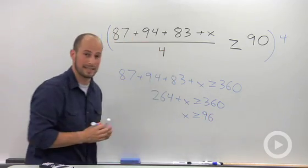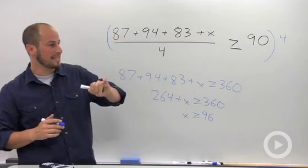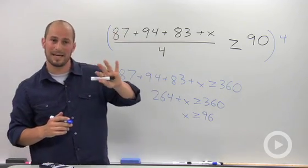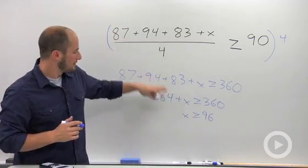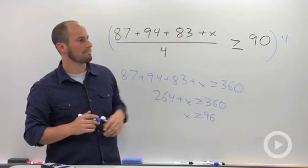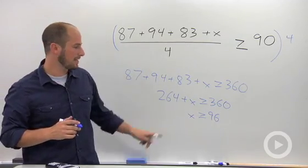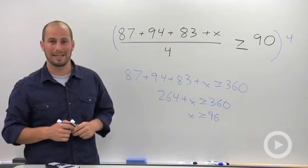to be greater than or equal to 96. So if we get a 96, 97, 98, 99, or 100, our test average would be above 90. By using inequalities and average, we're able to calculate the grade that we need to get in that range.